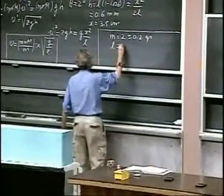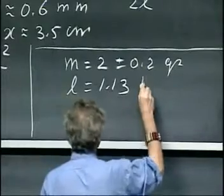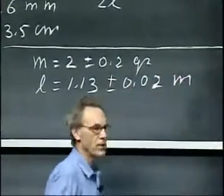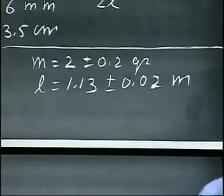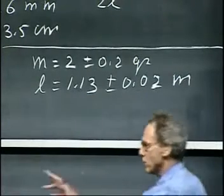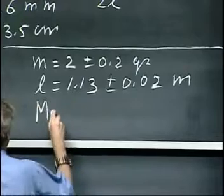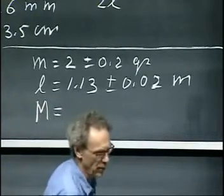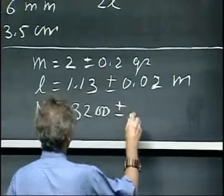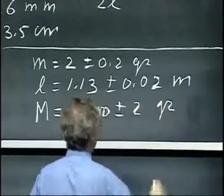The length of the pendulum is 1.13 meters, plus or minus two centimeters. We're not certain. It's an accuracy of about two centimeters. And the mass of that block, which is huge, I believe is 3,200 grams, 3.2 kilograms, with an uncertainty of about two grams.